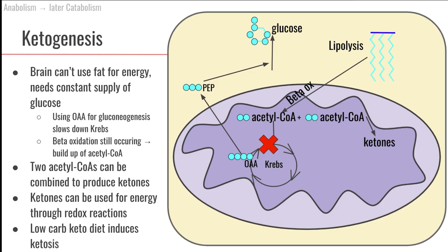Let's move on to another pathway of metabolic reactions: ketogenesis. This is an anabolic reaction in that we're building something. Because we have the word 'genesis' here, ketogenesis means we are building ketones.